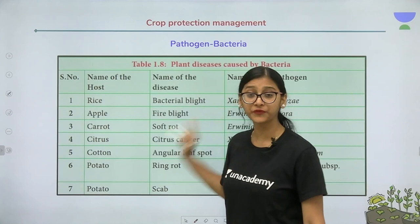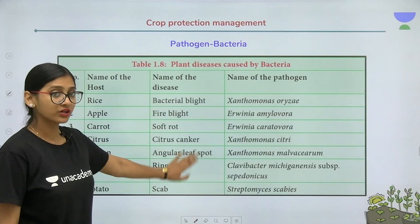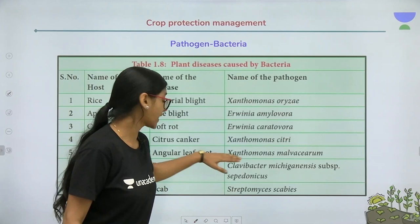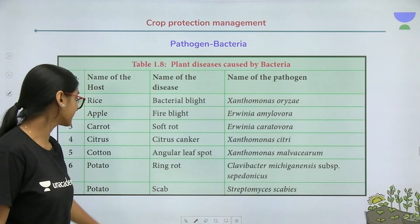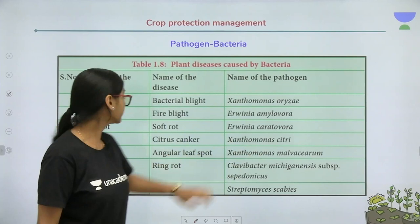Citrus canker is very, very important — questions on this have occurred in NTSE, NSCJS, and NSO exams. Citrus canker occurs in citrus plants and the scientific name of the pathogen is Xanthomonas citri — very important. Ring rot and scab are other diseases seen in potato.